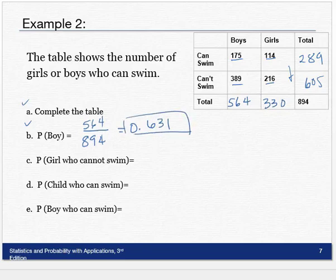Part C: Probability of a girl who cannot swim. So here's the girls. The ones that can't swim, that's 216 out of 894. Make it a decimal, 0.242. Three decimals is good.